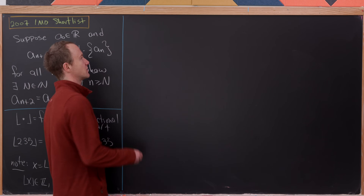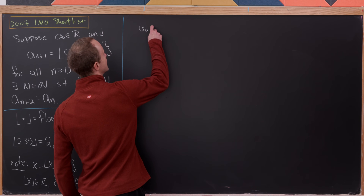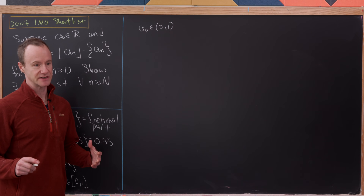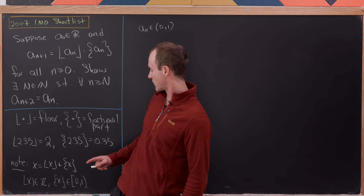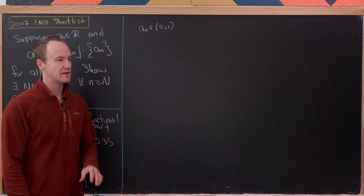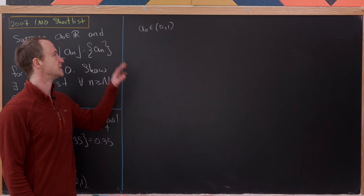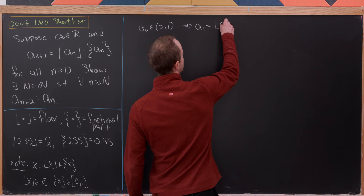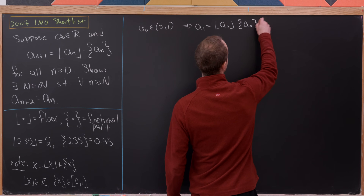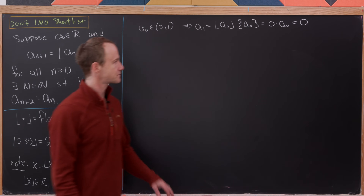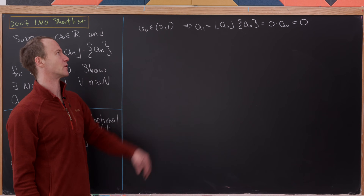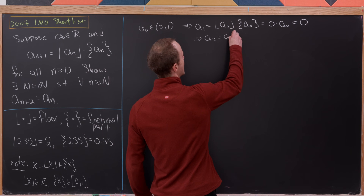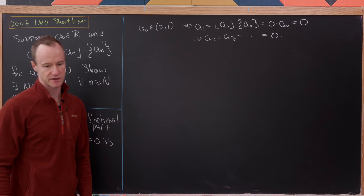Let's start with some exploration. If a₀ is in the interval (0, 1) — assuming a₀ is not an integer since if it were, the fractional part equals 0 and everything after is 0 — then a₁ equals the floor of a₀ times the fractional part of a₀, which equals 0 times a₀, which equals 0. So a₁ = a₂ = a₃ = … = 0.